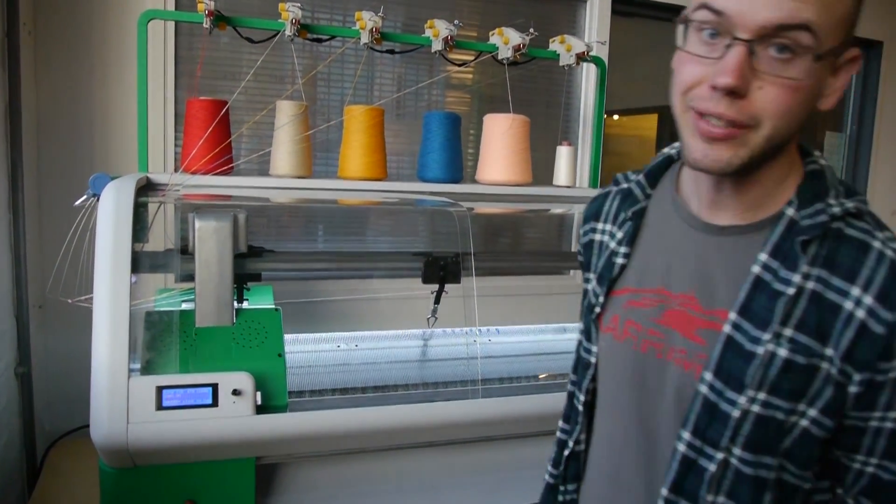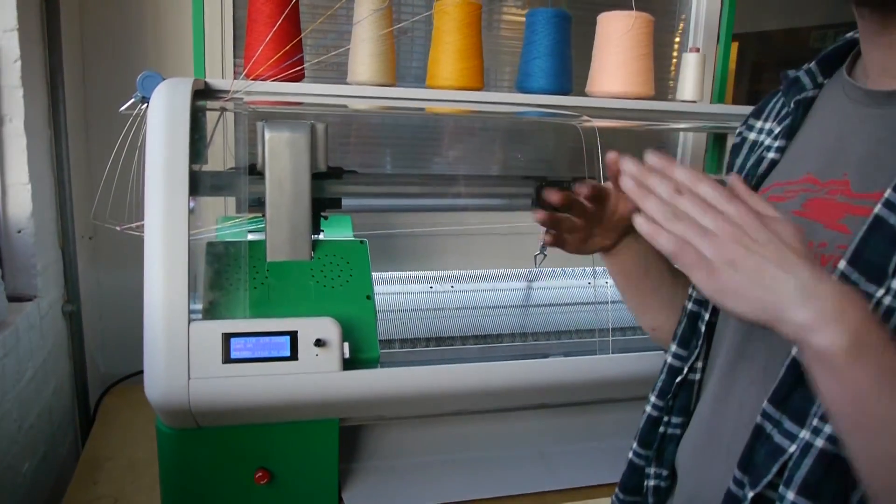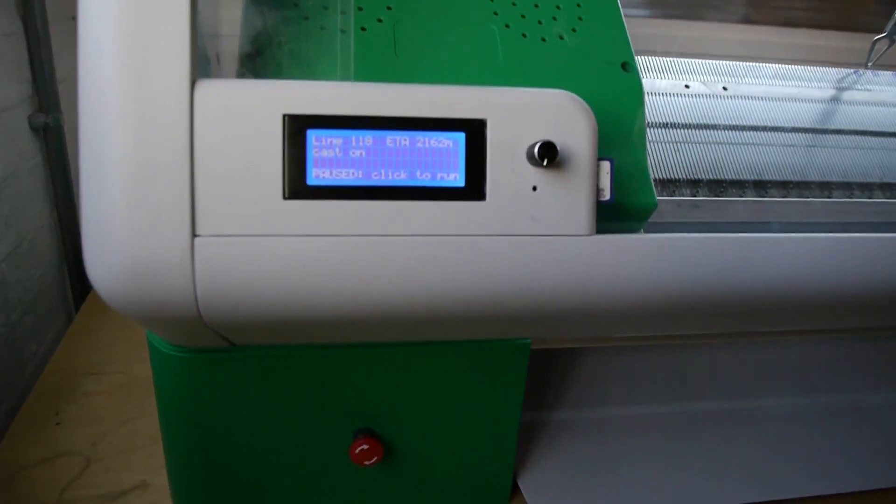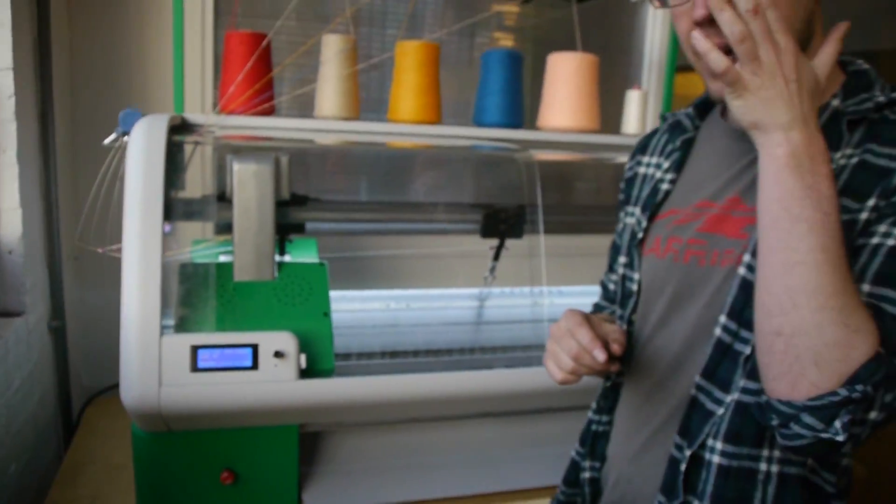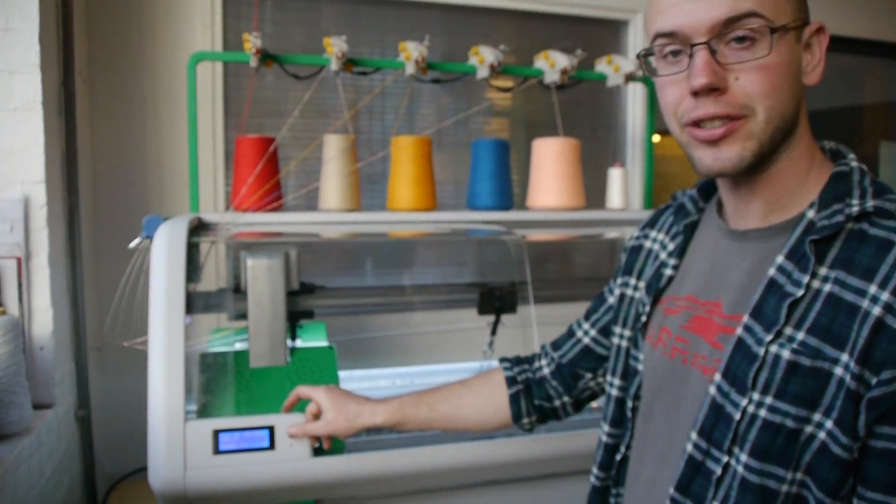So draw thread's done, and the next thing it will do is cast on with the main yarn, so it just kind of uses all the needles to get nice loops on all the stitches. So I'll press the button again, and it'll do that.